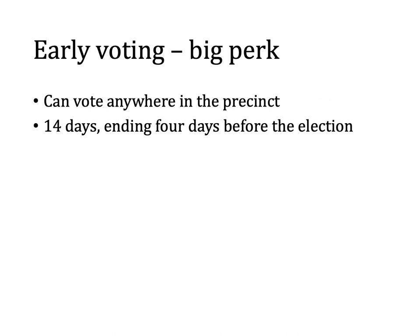Early voting in the United States and in Texas allows you to vote anywhere in the county for 14 days, ending four days before the election. I've talked to some people who early voted this year and it's like they shop for a place to vote — they'll see a long line somewhere, then a friend texts saying another polling place has a short line, and they race over there. You can vote anywhere in the county and don't have to worry about being in the right location.